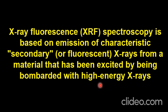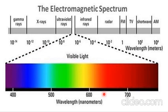X-ray fluorescence spectroscopy is both a qualitative and quantitative analytical technique — you can determine the quality as well as the quantity of different elements present in a material. X-rays are part of the electromagnetic spectrum, which is based on the energy and wavelength of electromagnetic radiation. The shortest electromagnetic radiation is gamma rays, with a wavelength around 10 to the power of minus 12 meters.